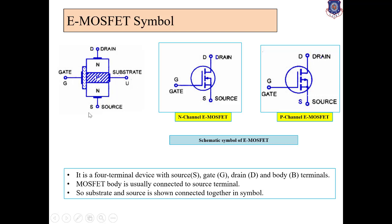It has four terminals — it is a four-terminal device: source, gate, drain, and the body terminal that is the substrate terminal. Substrate is always internally connected with the source, so it will be denoted by SS, meaning double S. MOSFET body is usually connected with the source terminal.